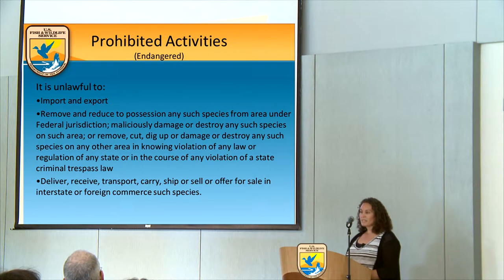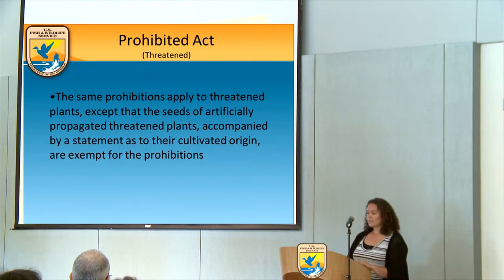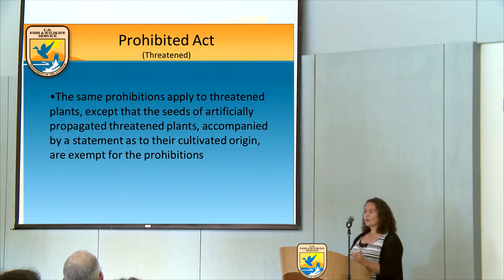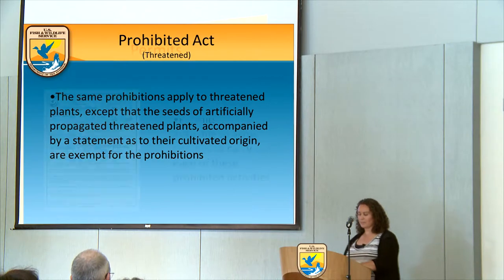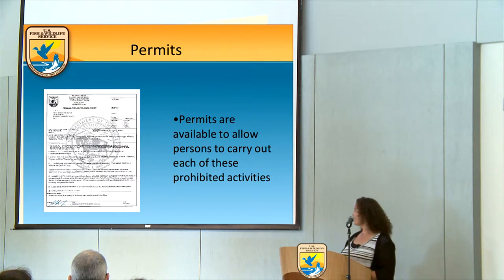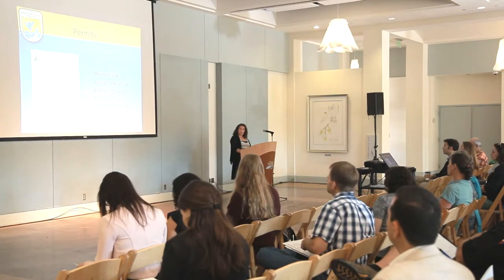It's also unlawful to deliver, receive, or transport species through interstate or foreign commerce. For threatened species, it's a little looser — if a seed's origin is from a propagated individual, a statement to that effect makes it exempt from the prohibitions of take. Permits are available for most of these activities, typically issued for scientific purposes, enhancement or propagation of survival of the species, economic hardships, botanical displays, and educational purposes.